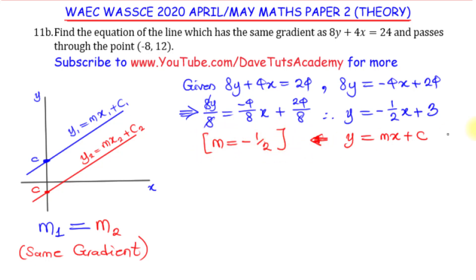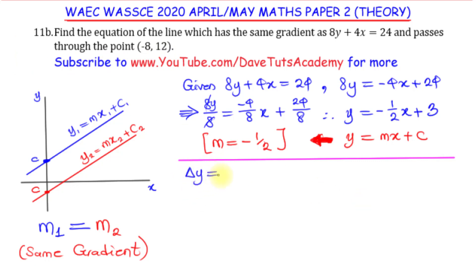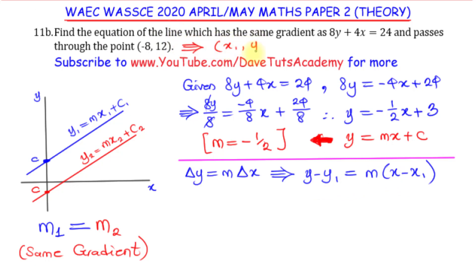This gradient of minus 1 over 2 is what we need for the other equation. We use the general point-slope formula: the change in y equals m multiplied by the change in x, which means y minus y1 equals m multiplied by x minus x1. The given point minus 8 comma 12 corresponds to x1 equals minus 8 and y1 equals 12.